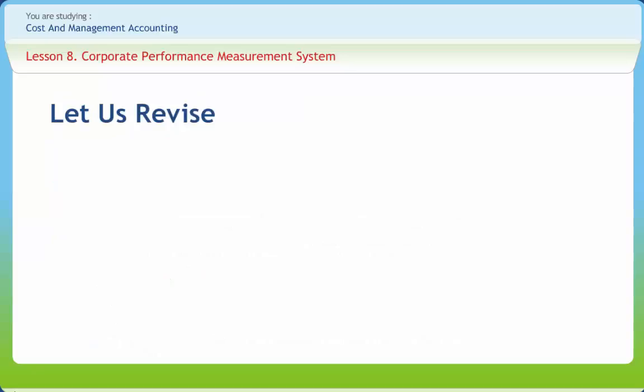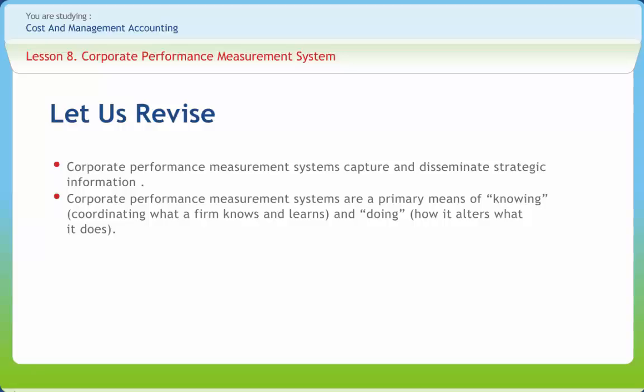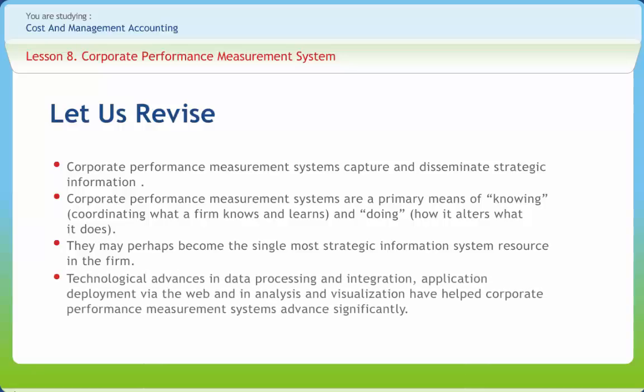Before we end, let us briefly revise what we have studied. Corporate performance measurement systems capture and disseminate strategic information that matters most to the firm in the form of strategic process and outcome measurement and most to the individuals within the firm in the form of performance measurement, incentives, and motivation. Because of this, corporate performance measurement systems are a primary means of knowing and doing. Over time, they may perhaps become the single most strategic information system resource in the firm. Technological advances in data processing and integration, application deployment via the web, and analysis and visualization have helped corporate performance measurement systems advance significantly. However, the best may be yet to come. While adoption rates of corporate performance measurement systems are high in larger companies, actual success in larger firms is more limited and adoption in smaller firms is embryonic.